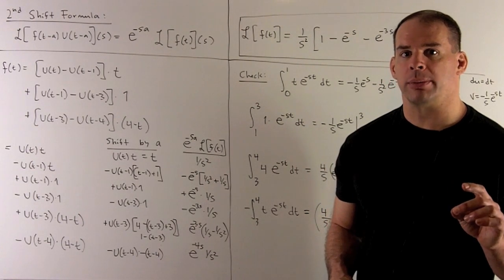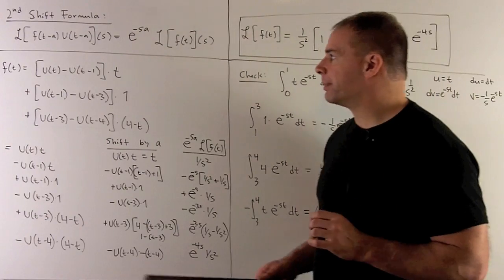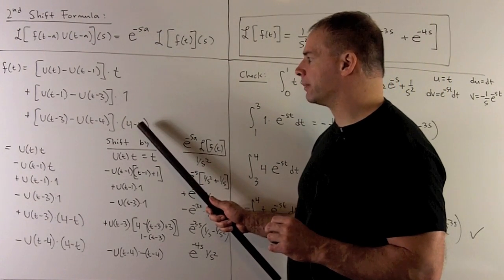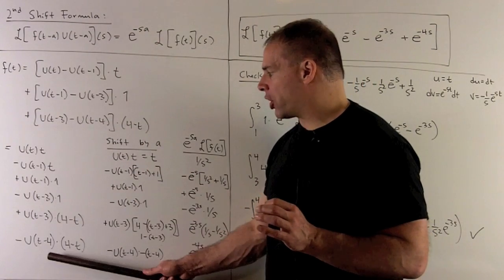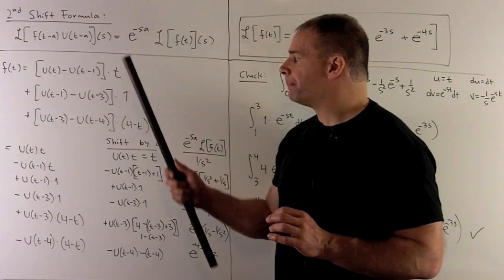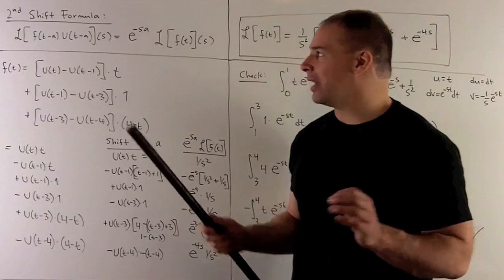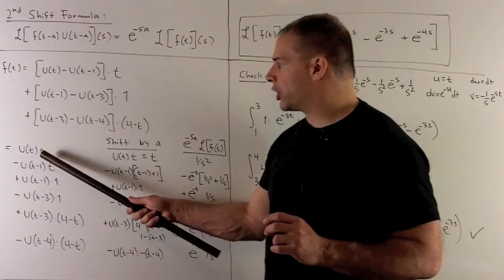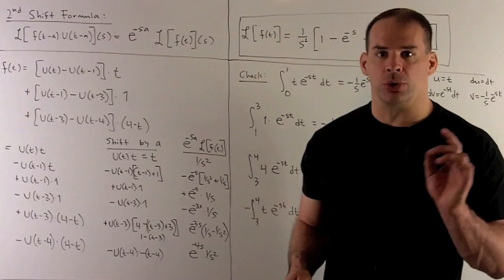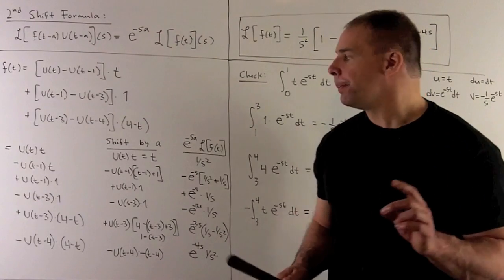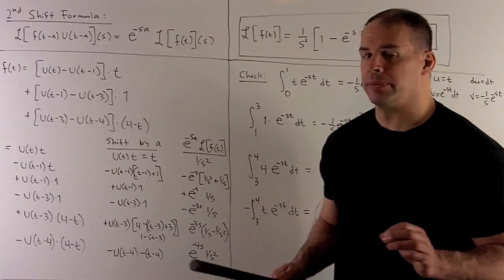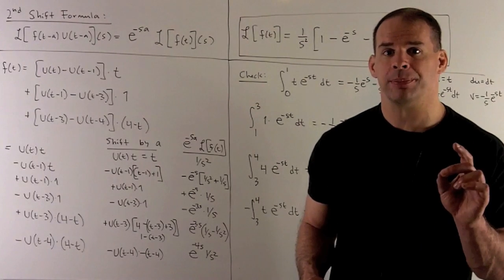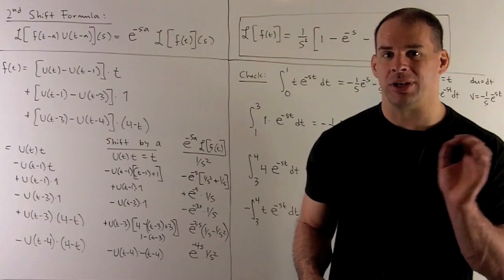What remains is the second shift formula and bookkeeping. We rewrite f of t in terms of shifted unit step functions and expand everything out — giving us six terms. For the first term, u(t) times t: there's no shift, and since u(t) equals 1 for t greater than 0, it's just the function t. The Laplace transform of t gives 1 over s squared, using the rule that the Laplace transform of t to the n is n factorial over s to the n plus 1, with n equal to 1.